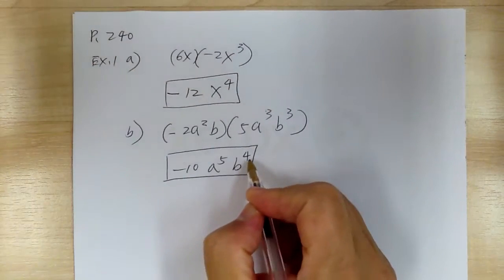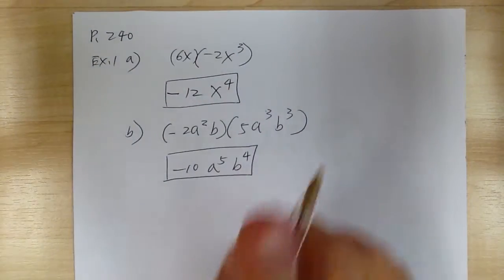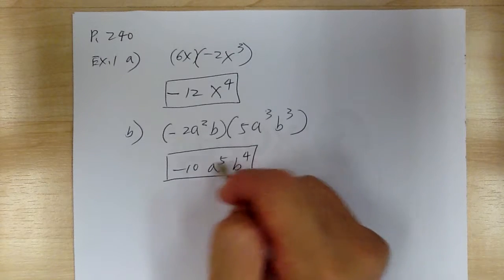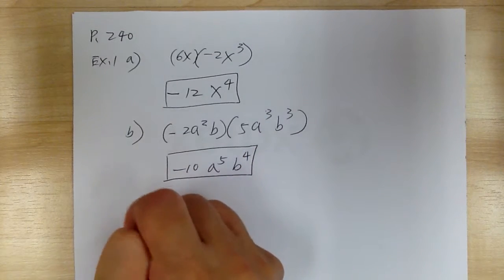Now be careful how you write your exponent. Make sure it's kind of up, a little bit higher. Don't write it too low. Make sure it's up. Let's go to c.